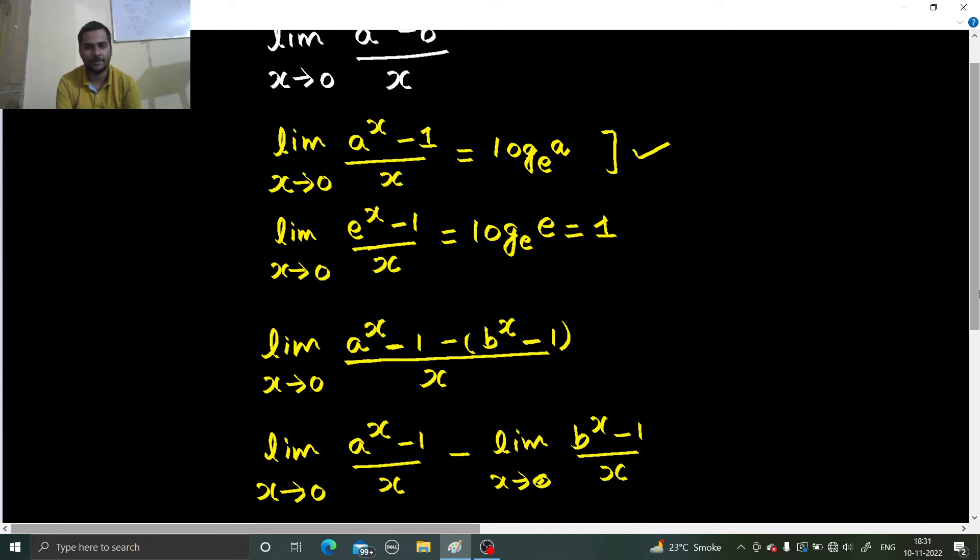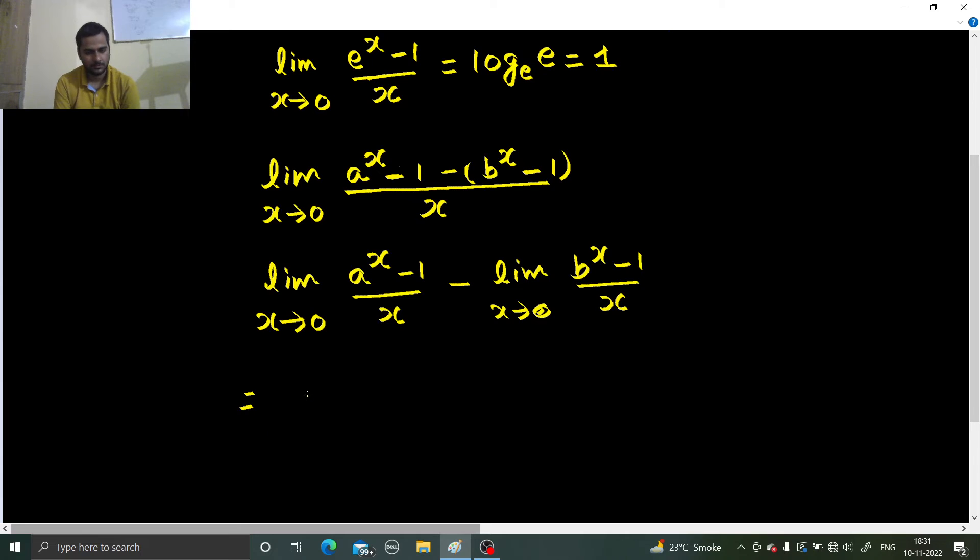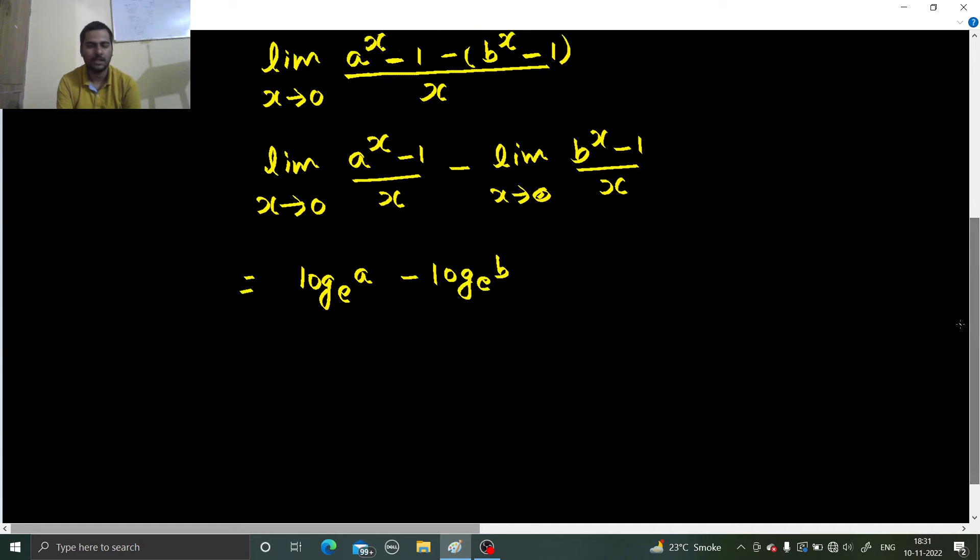Now as I told you in the formula, a power x minus 1 by x at limit x tending to 0 is log a base e. So log a to the base e from here minus log b to the base e from here. You know, log of x minus log of y, provided they have the same base, let's say the base is k. So this gives you log x by y to the same base k. A base is e, so you will get log a by b to the base e. Fine enough?